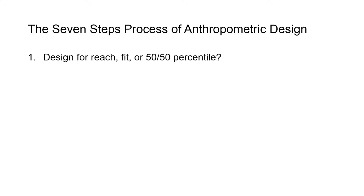Now, design for reach. Step number one is to figure out whether you are trying to design to reach something, for example a fire extinguisher. In that case you try to make sure that the smallest person can reach it. Design for fit is when you're trying to fit the largest person. Think about designing a door - you have to make sure the largest person can get in. If the largest person can get in, then the smallest person will be able to do that.